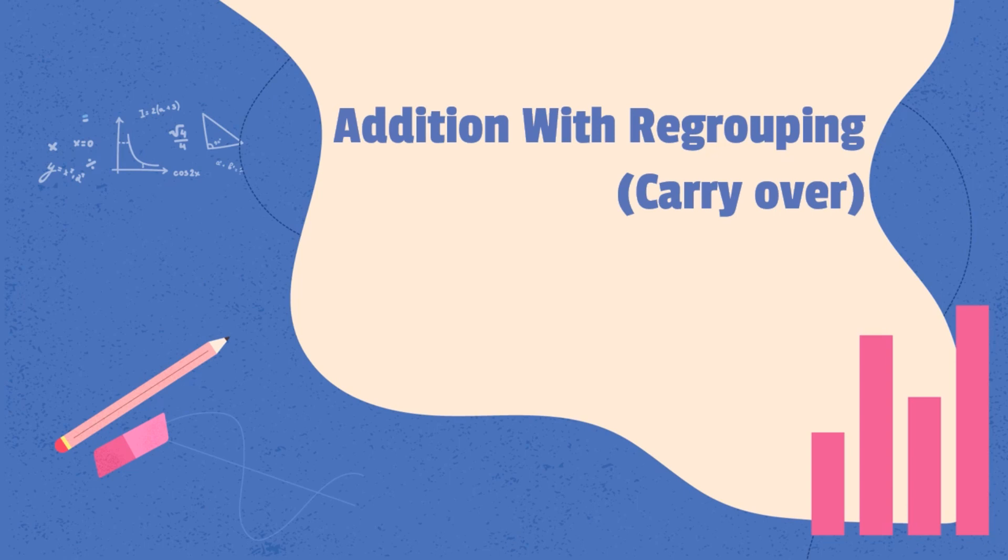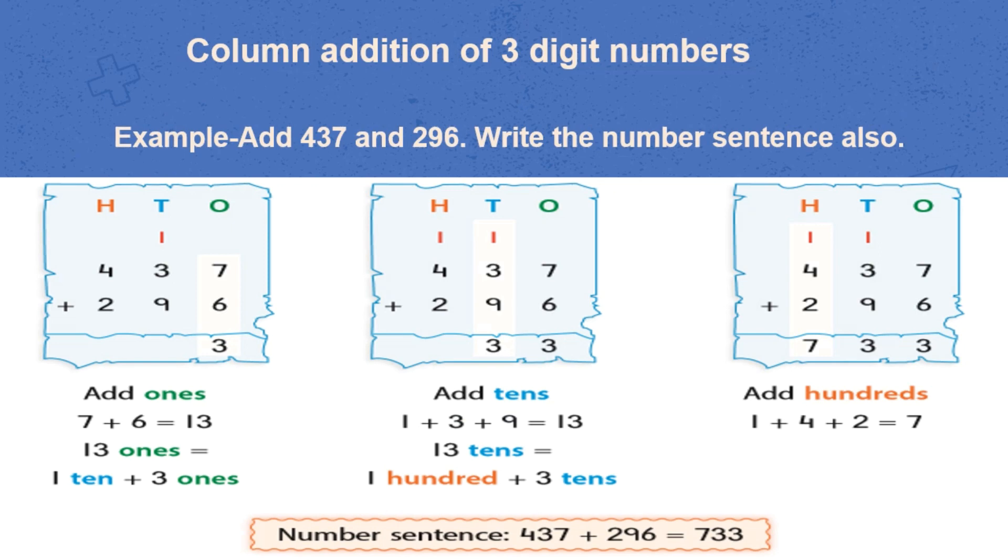Our next topic is Addition with Regrouping. Here, in the given example, we will add 437 and 296. When we add 7 and 6 at 1's place, it will give us 13. So, we will write 3 at 1's place and carry 1.